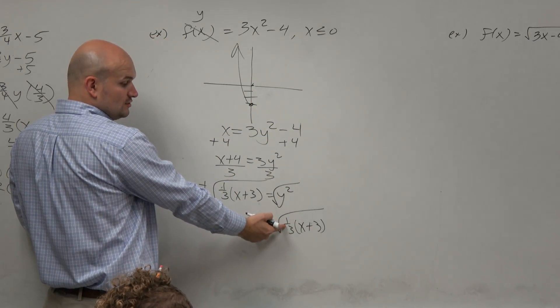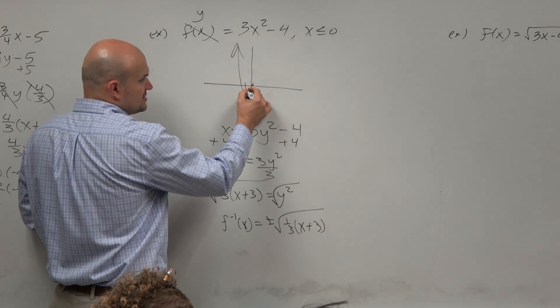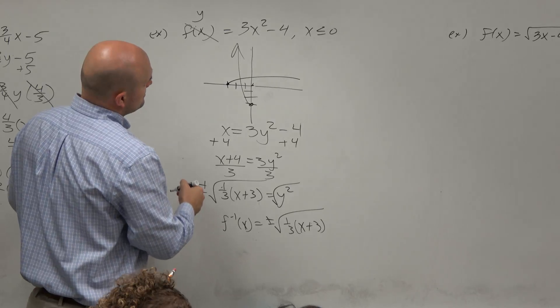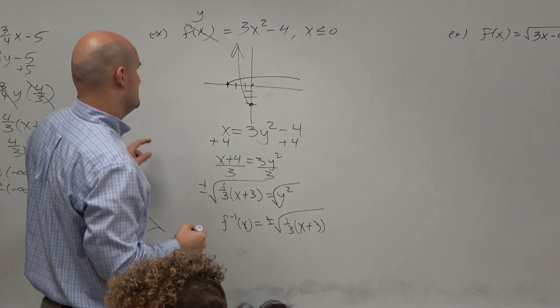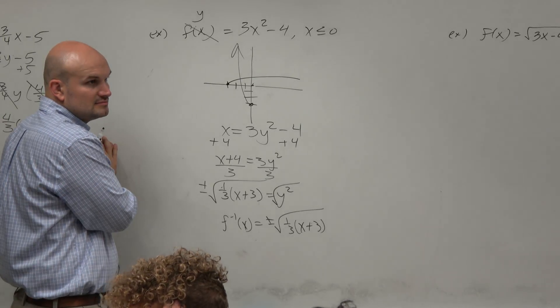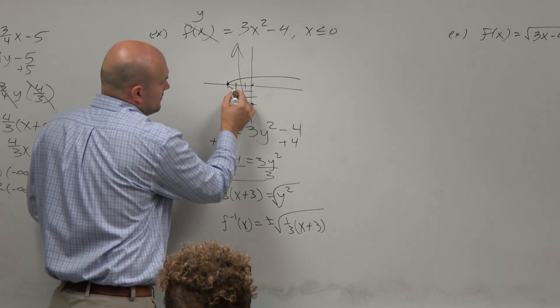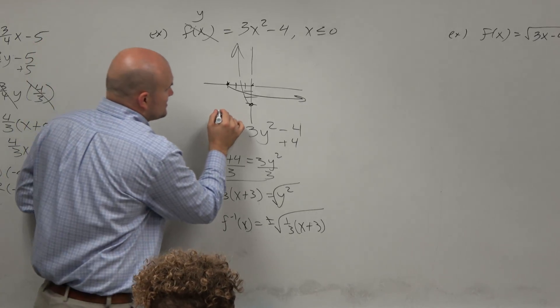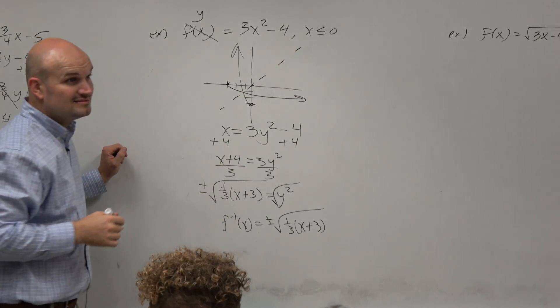The 1 third is a horizontal stretch of 1 third. This is 3 units to the left. That's not the best. Does that look like the inverse graph? What about this one? Does that look like it's reflected about the y equals x line? Yeah.